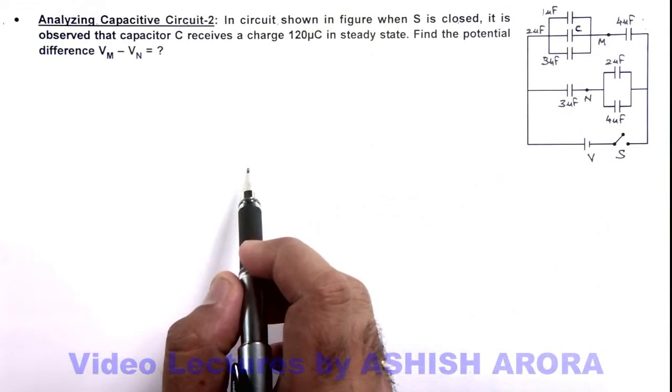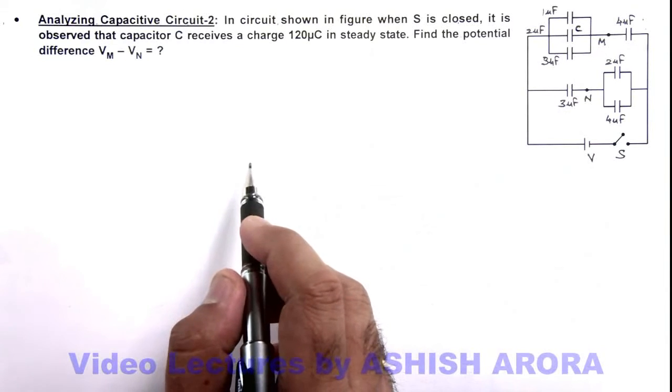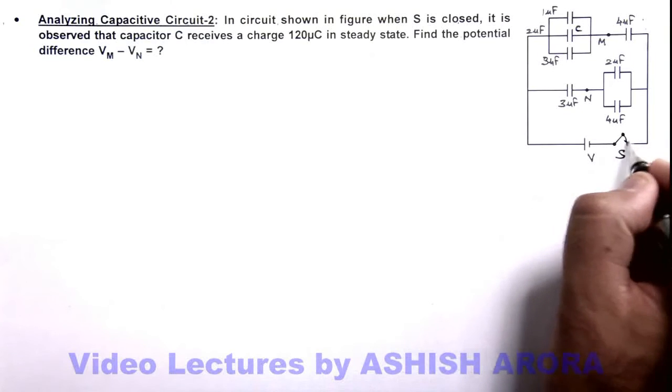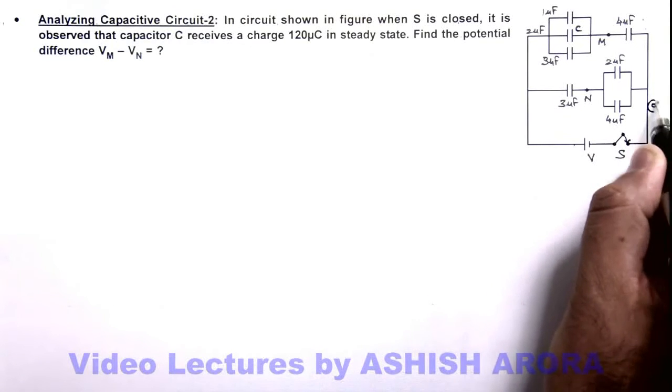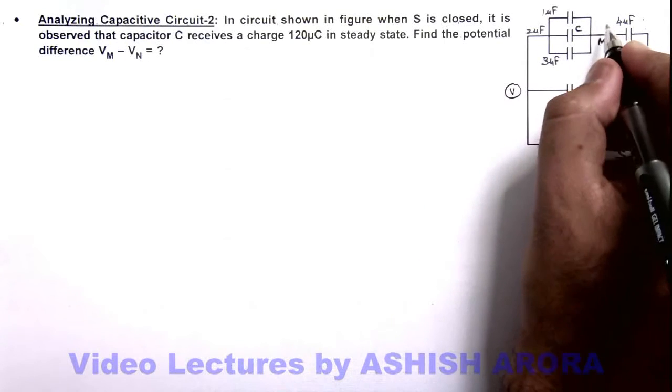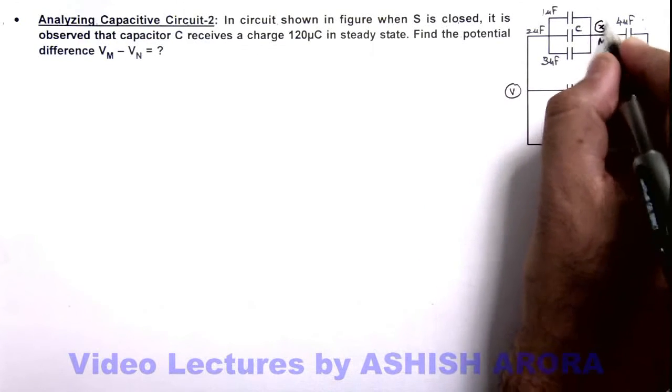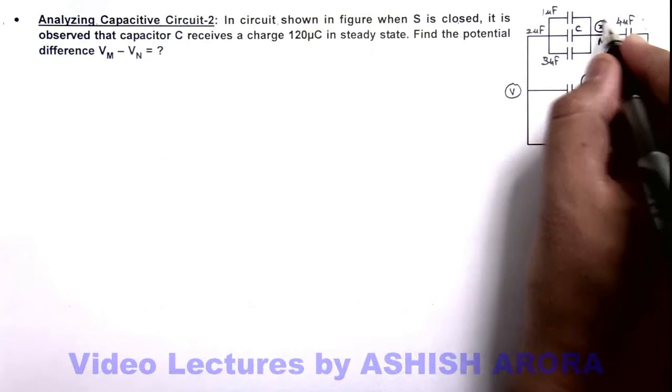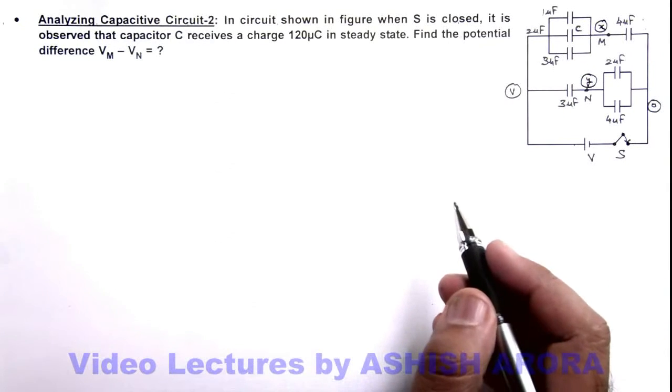In this situation, we again distribute the potential. If we take the potential on the right hand side of battery to be zero, on the left hand side it will be V. We can assume the potential at point M is x and at point N is y. This is the common method of nodal analysis or distribution of potentials.